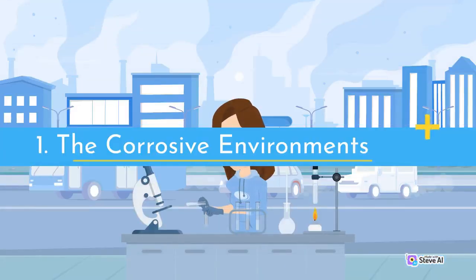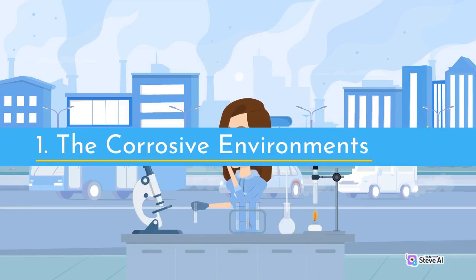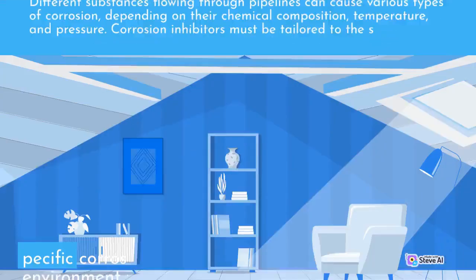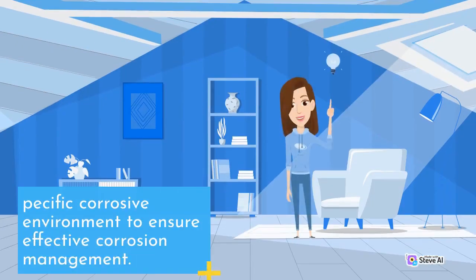1. The corrosive environments. Different substances flowing through pipelines can cause various types of corrosion, depending on their chemical composition, temperature, and pressure. Corrosion inhibitors must be tailored to the specific corrosive environment to ensure effective corrosion management.